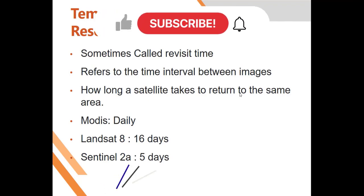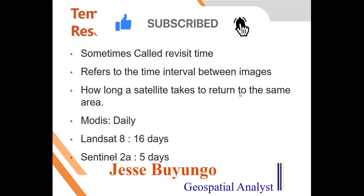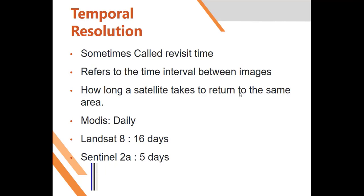Temporal resolution, sometimes called revisit time, refers to the time a satellite takes to return to the same spot. For example, if a satellite passes over Kampala, how long will it take to come back to that same place? For MODIS, one pass happens in the morning and another in the evening. Landsat 8 has a temporal resolution of 16 days. Sentinel-2A has a temporal resolution of 5 days. A high temporal resolution means you can get images more often, which is useful for mapping abrupt and daily changes.